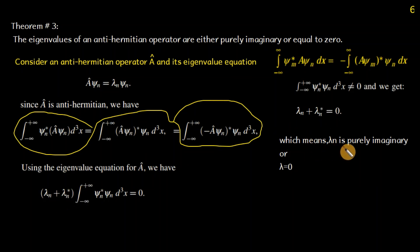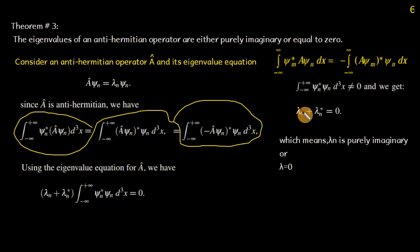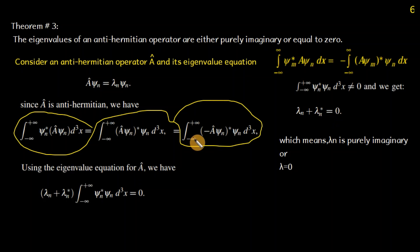If λ = 5 (real), then 5 + 5 = 10 ≠ 0, so a real eigenvalue is not possible. But if λ = 5i (imaginary), then 5i + (−5i) = 0 ✓. So λ_n + λ_n* = 0 is satisfied only when λ_n is purely imaginary or equal to zero. Thus the eigenvalues of an anti-Hermitian operator are either imaginary or zero.